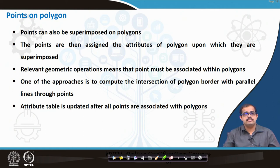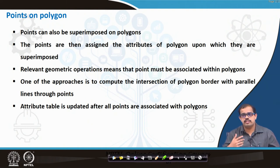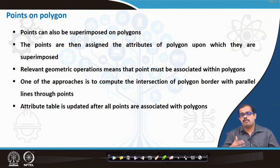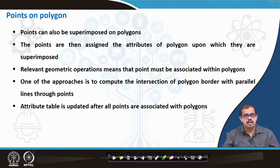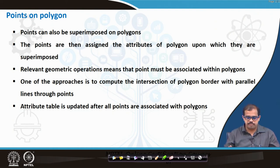The points are then assigned the attributes of the polygon upon which they are superimposed. Each of these points is added as an attribute. One approach is to compute the intersection of a polygon border with parallel lines through points. The attribute table is updated after these points are associated with the polygon — any operations on any dataset are updated in the attribute data.